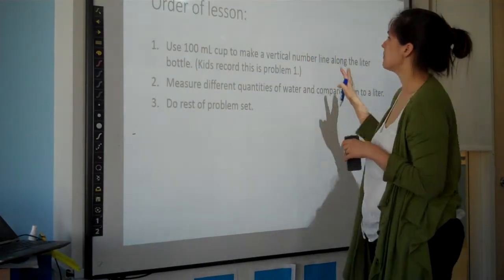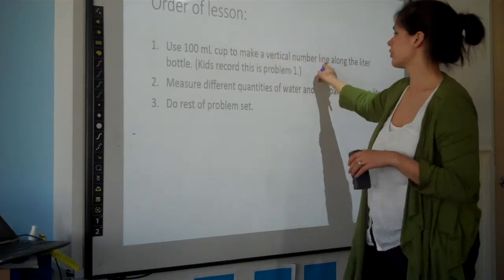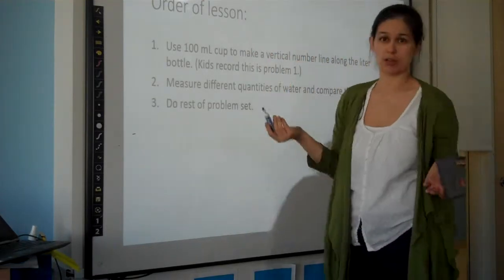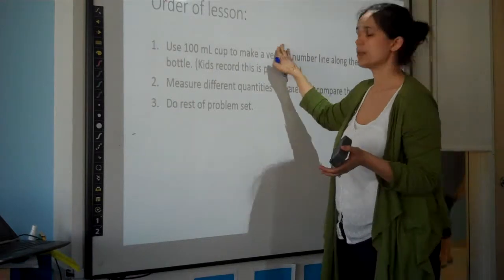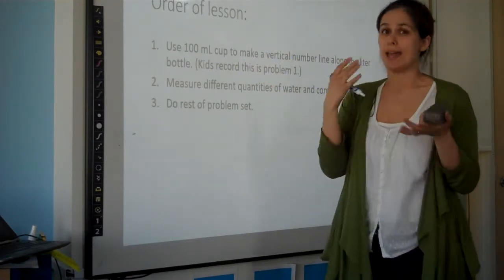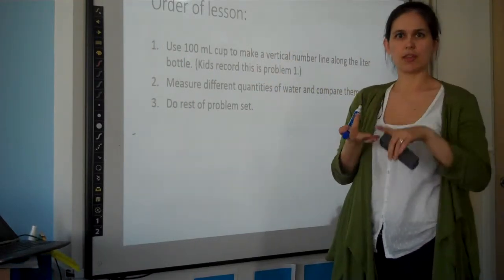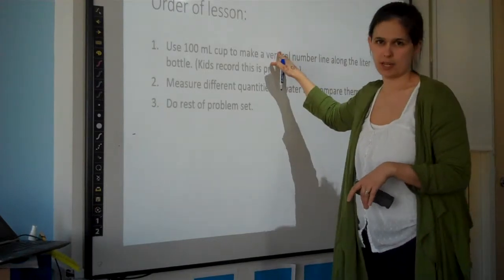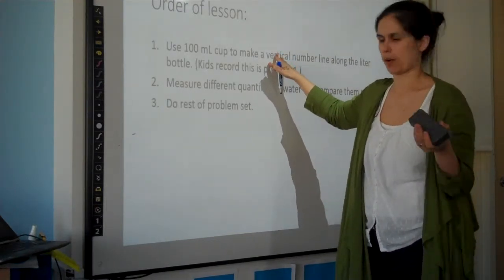The order of the lesson: basically you use the hundred milliliter cup to make your vertical number line, so you're making a beaker. When you're done doing this, kids go to their problem set and they read, they draw, they write what you just did, and they describe that activity and why it worked.